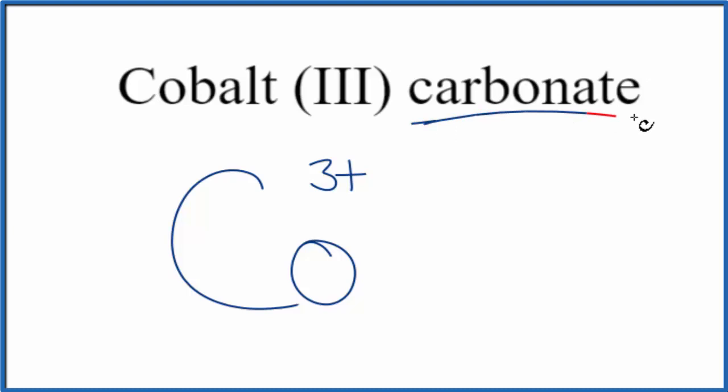For the carbonate, you won't find carbonate on the periodic table. When you see ATE, you're thinking polyatomic ion. So you either have memorized that carbonate is CO3 2-minus, or if you're allowed, you look it up on a table of polyatomic ions.